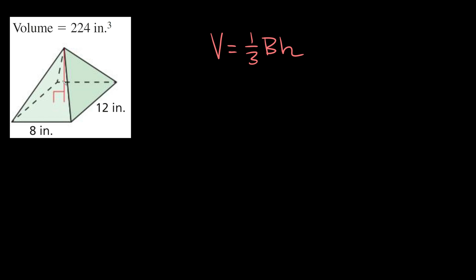Here's our next pyramid. As you can see, this time the base is a rectangle — it's eight inches by 12 inches. And the volume this time is given as 224 inches cubed. Again, we use the exact same formula. So let's plug in what we're given: 224 is equal to one third times the area of the base. The area of this bottom rectangle is eight times 12, which is equal to 96.